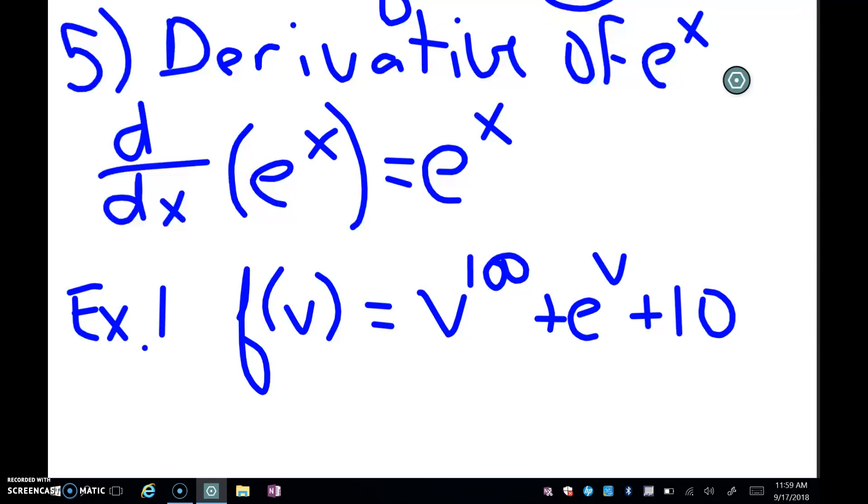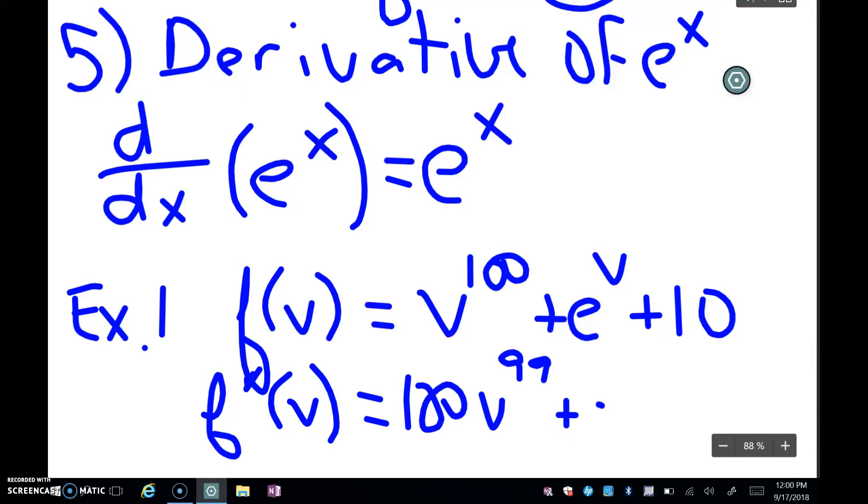So in other words, whenever you see e^x, or in this case, e^v, you're just going to copy that back down again. So my first example, I've got a sum problem. So remember that we have to do the derivative by taking each term's derivative separately. So v^100's derivative using the power rule would be 100v^99. And here's my new rule, e^v, you just write e^v back down again.